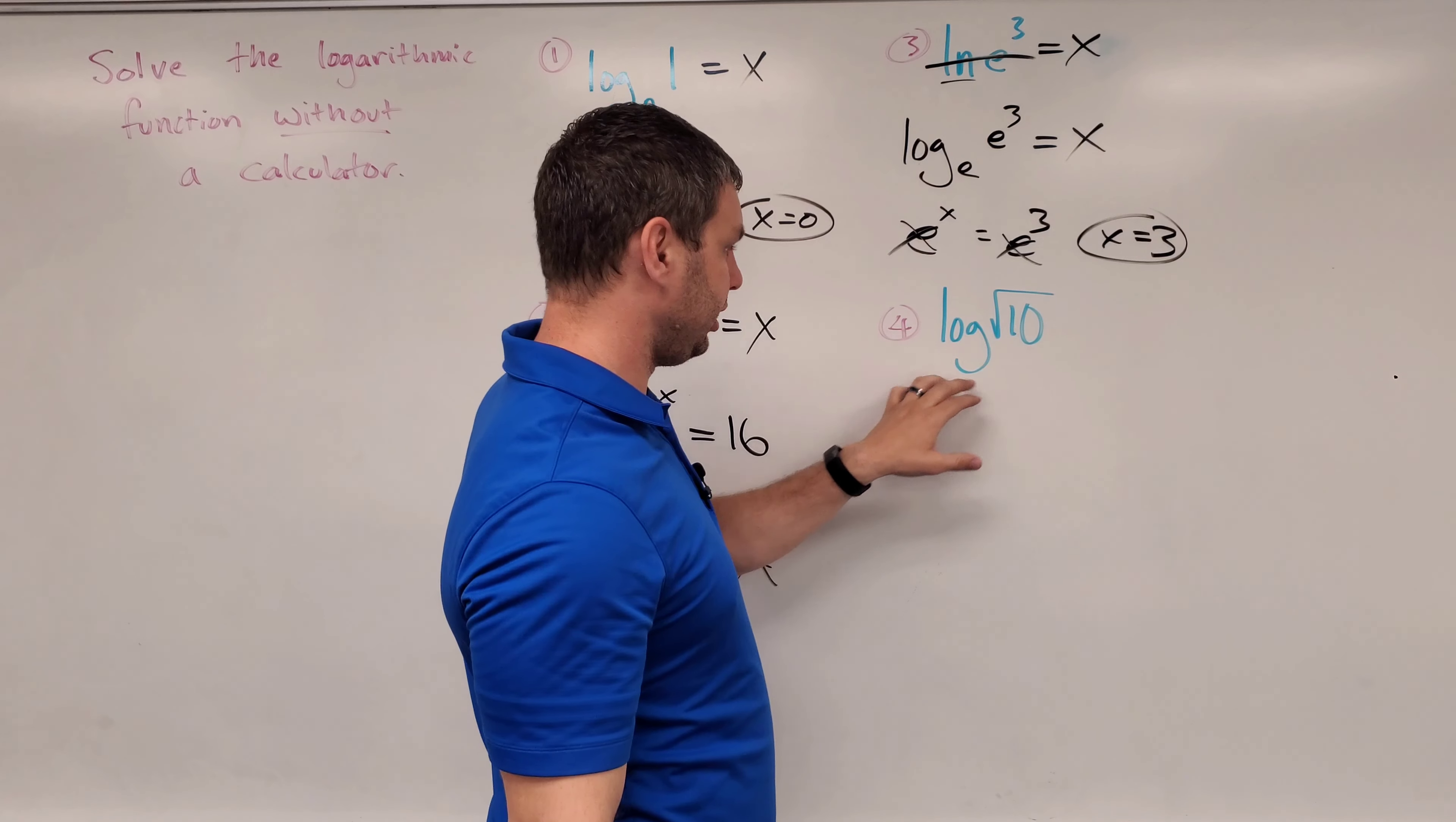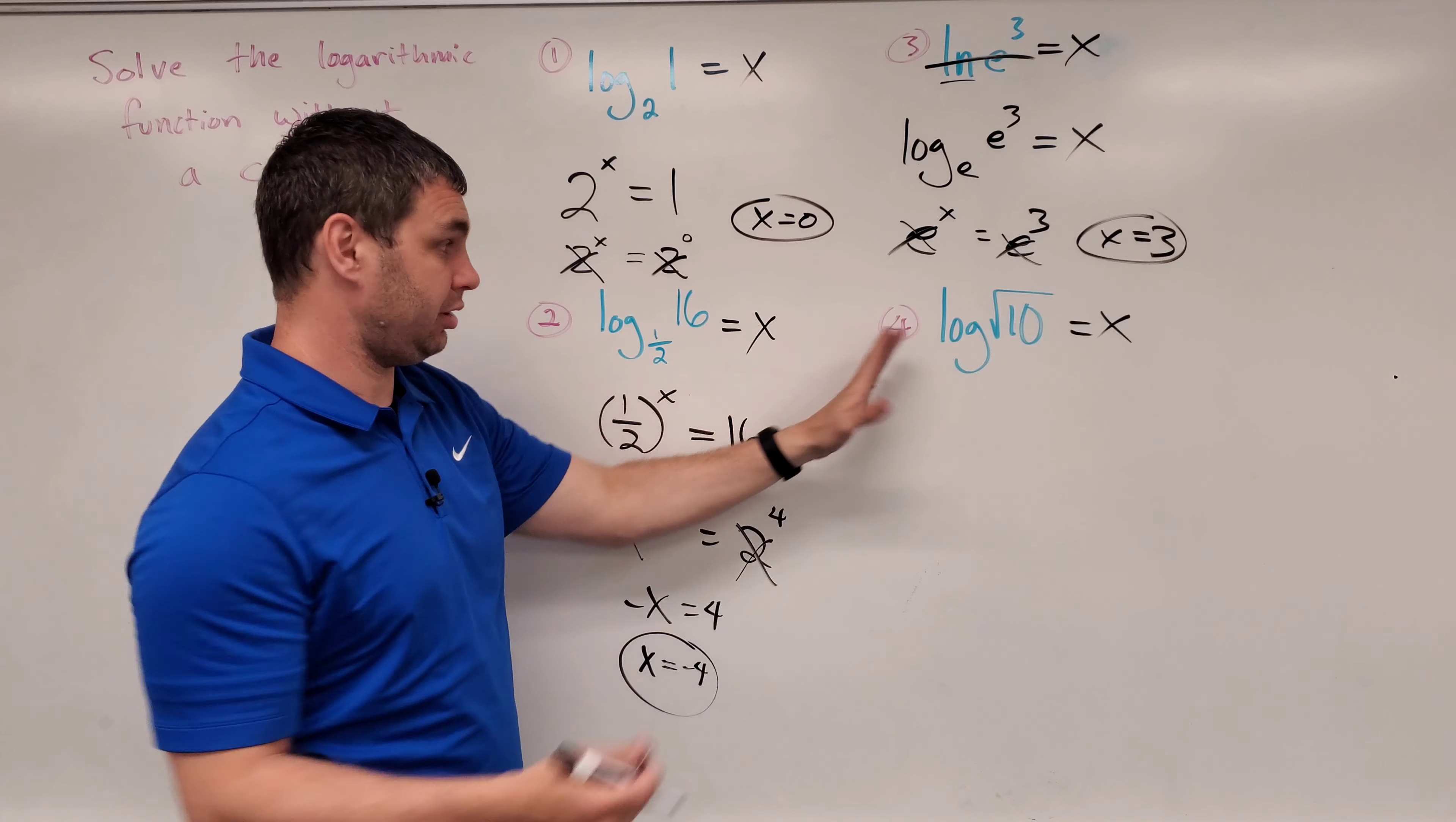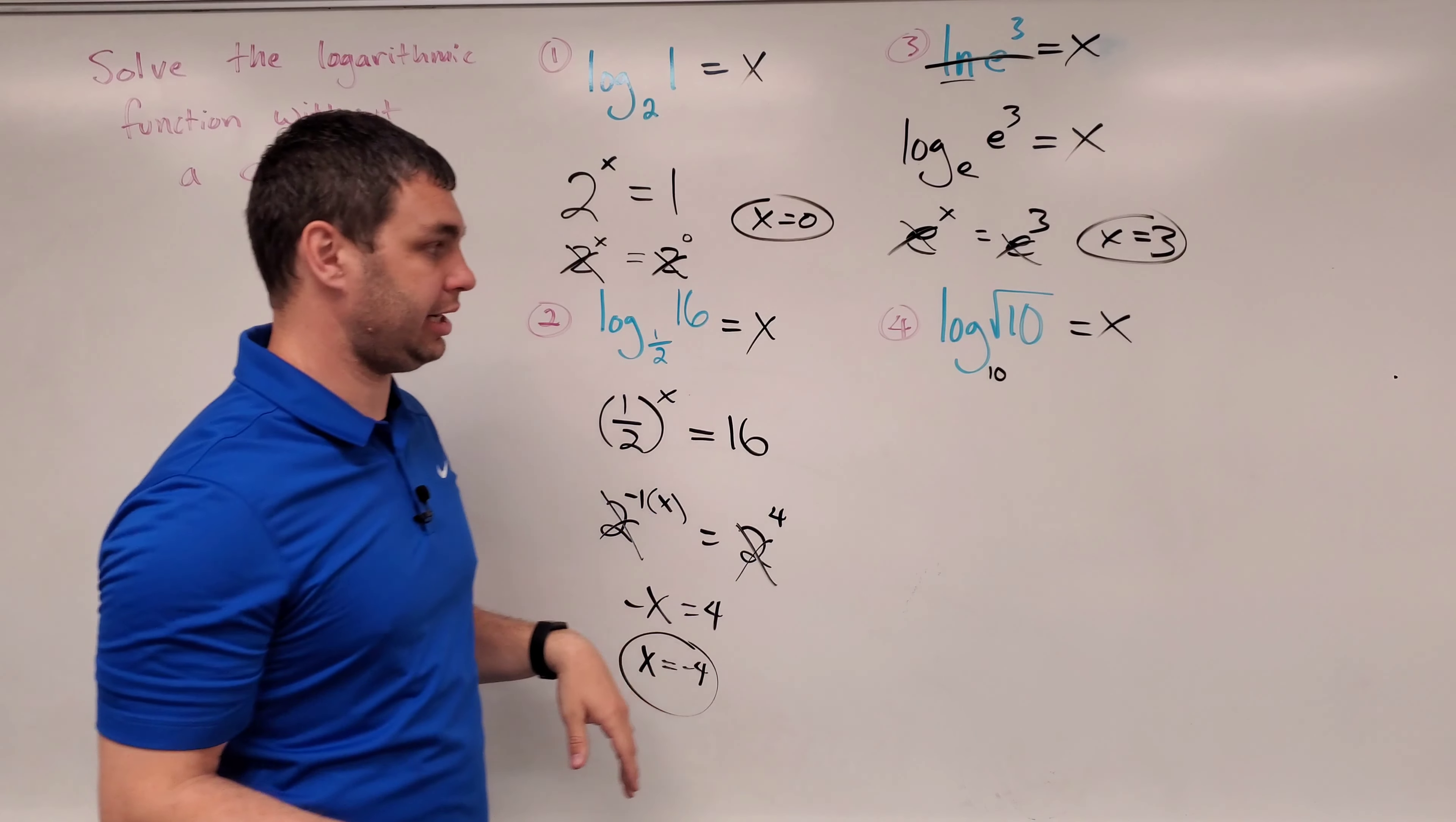What about number 4? Log of, again, there's no base. So log of the square root of 10 equals what? So equals x. Now again, if there is no base and it is a log, not a natural log, that's log base e for that one. But if it's a regular log and there's no base, we can assume it's a 10 because we use 10 as our base for our counting system.